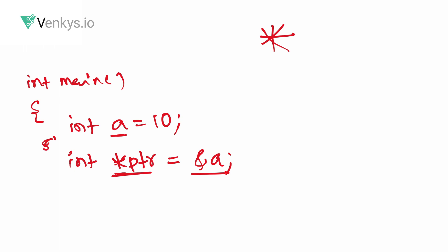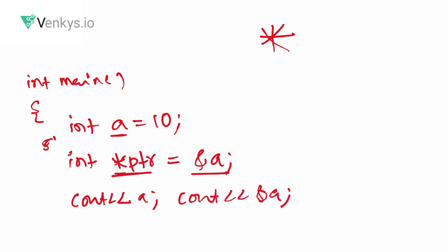To summarize the print operations: cout a prints 10, cout &a prints the address of a, and cout ptr prints the address stored in ptr, which is also 0x1000. cout *ptr dereferences the pointer and prints the value at that address, which is 10. So a and *ptr print the same value, and &a and ptr print the same address.